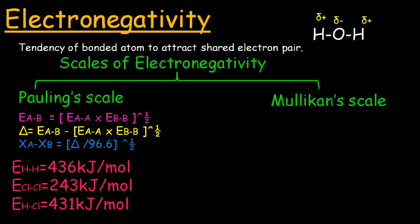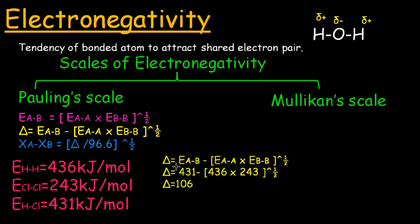Let's do it with an example. The bond energy of hydrogen is 436 kJ per mole, the bond energy of chlorine is 243 kJ per mole, and the bond energy of the product HCl is 431 kJ per mole. Find out the value of delta, which equals E_AB minus the square root of E_AA multiplied by E_BB.